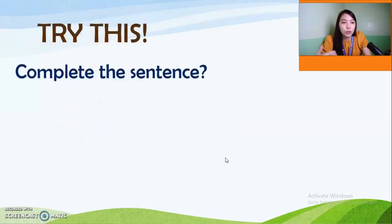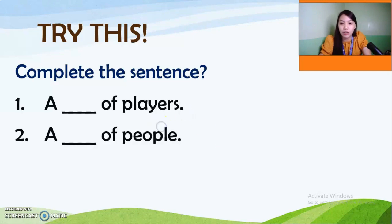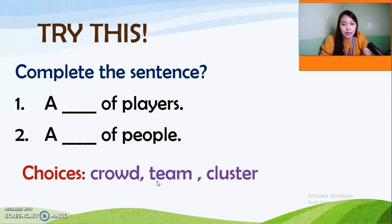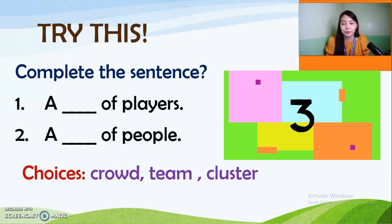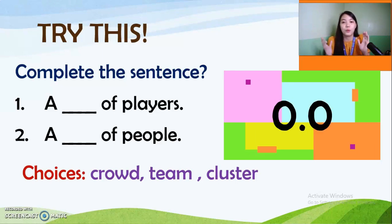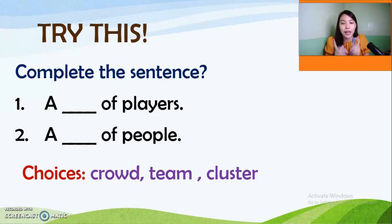Now let's try this one. I want you to complete the sentence: number one, 'a blank of players'; number two, 'a blank of people.' I'll give you some choices for that. Ten seconds starts now. Okay, time's up! If you have your answer, you can comment in the comment box.